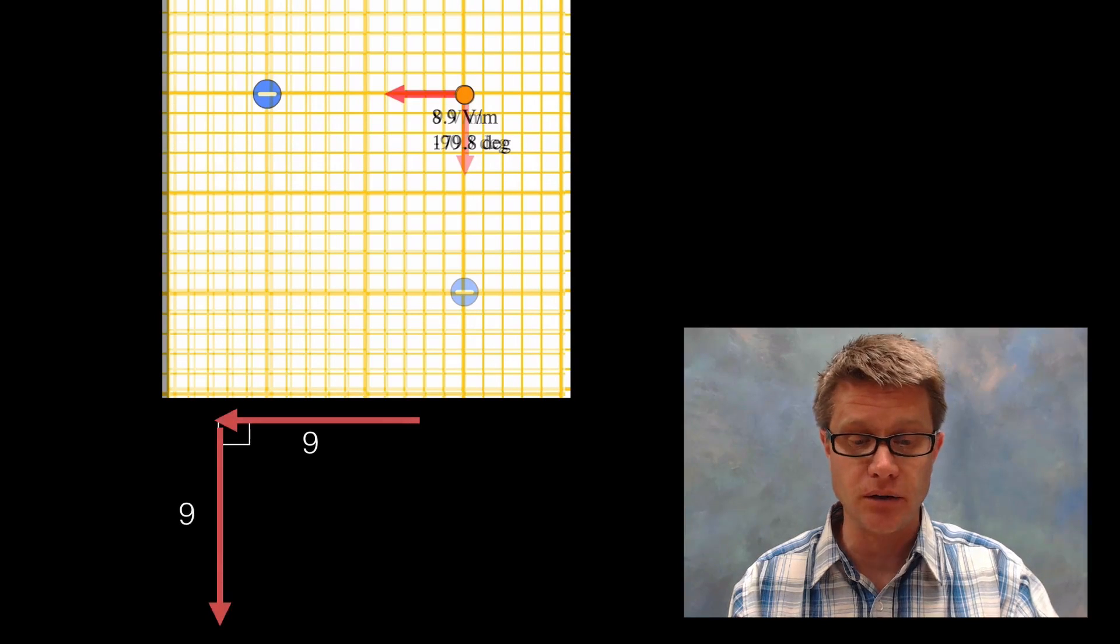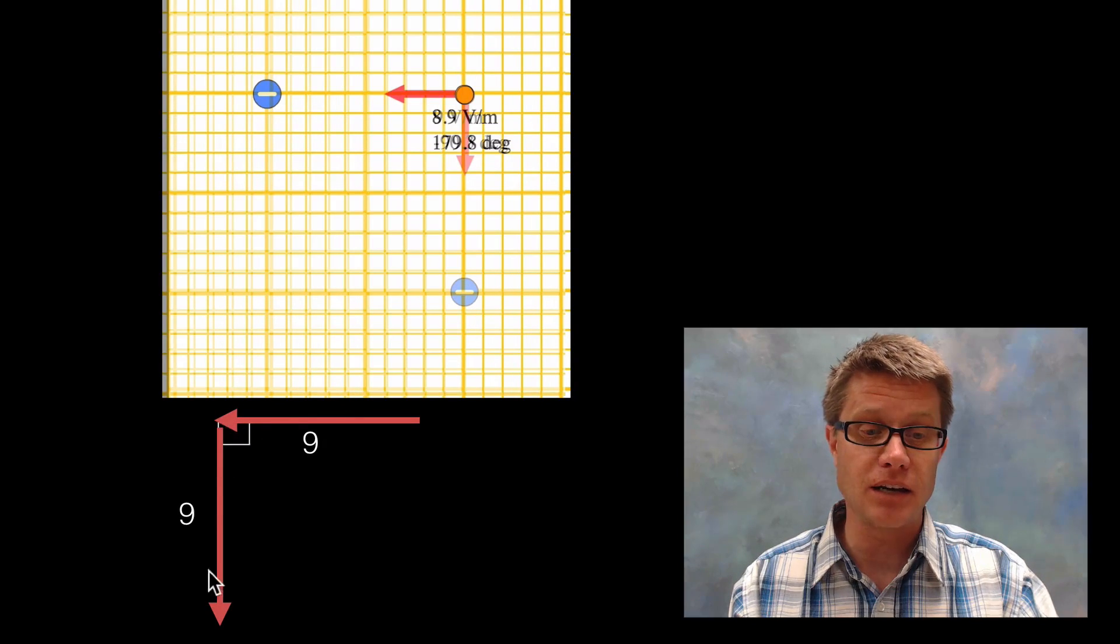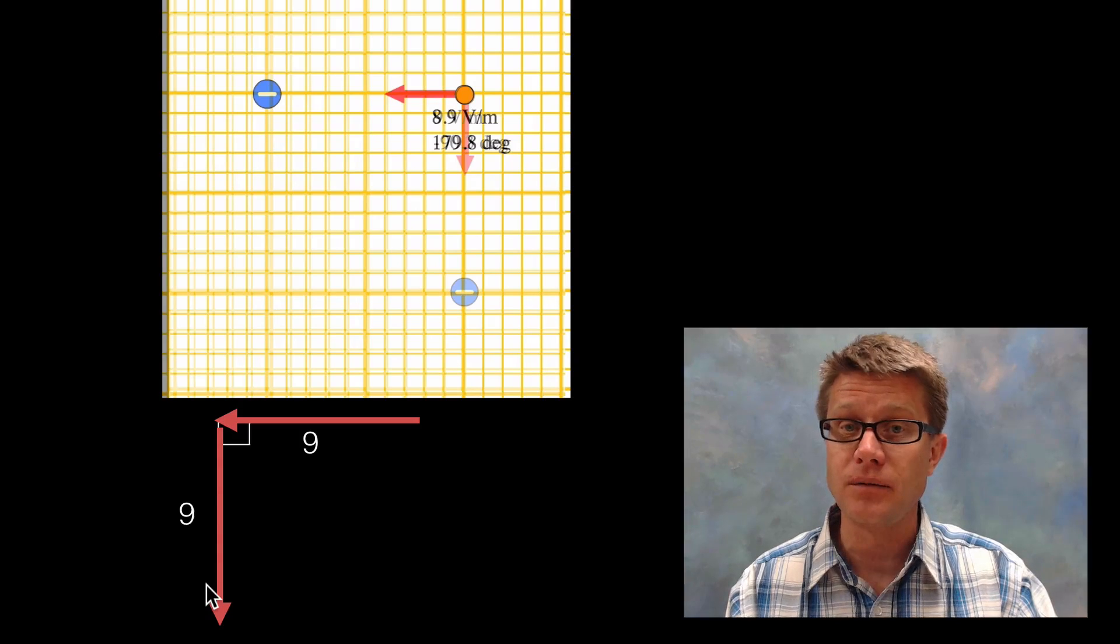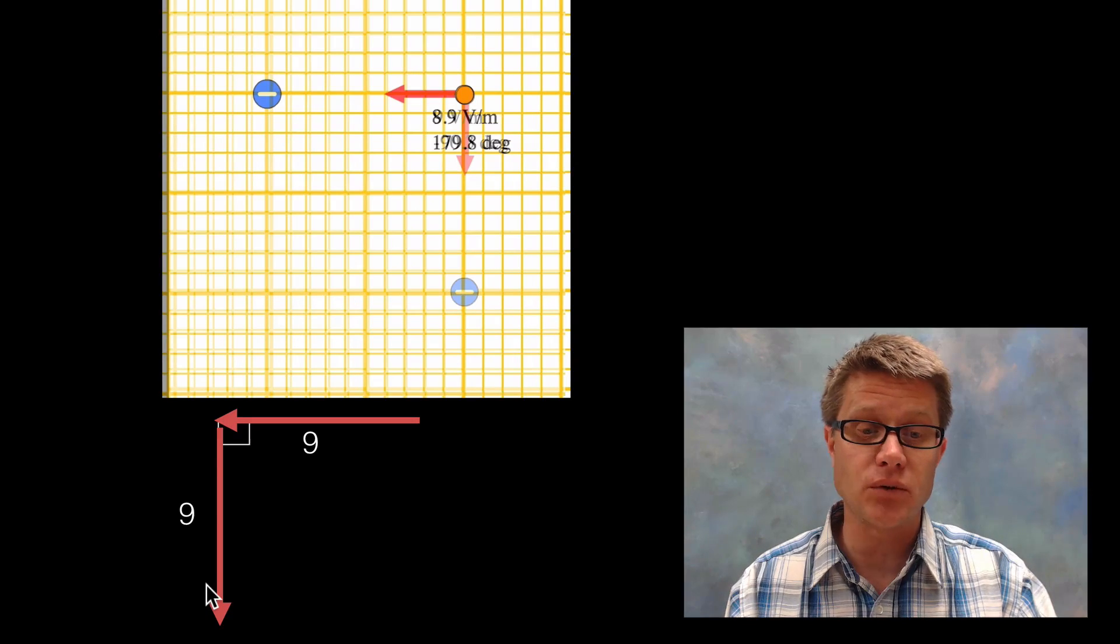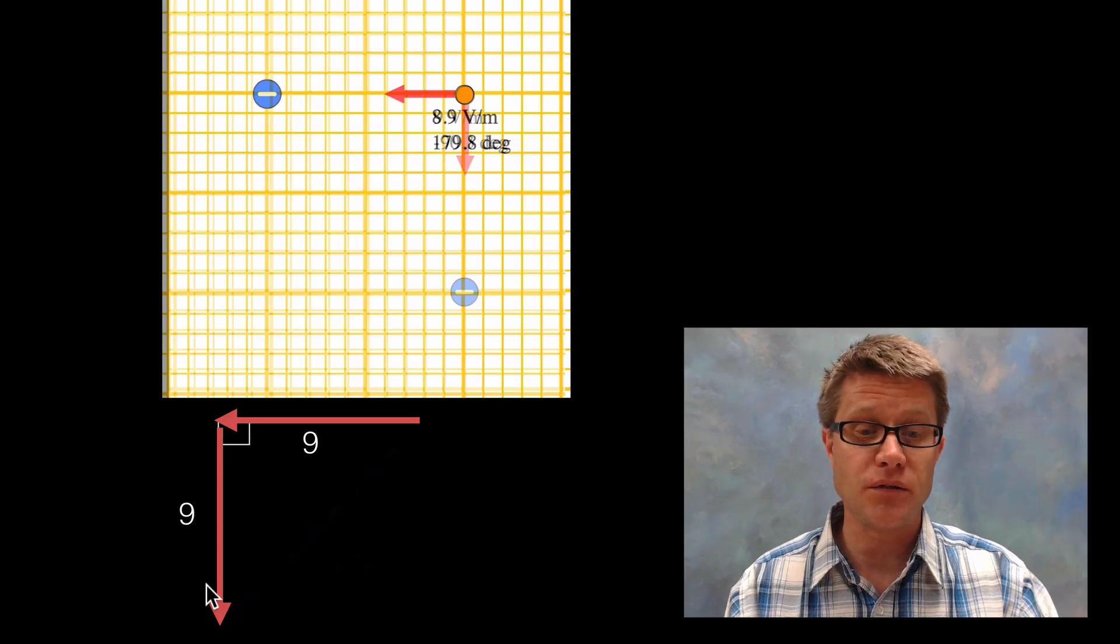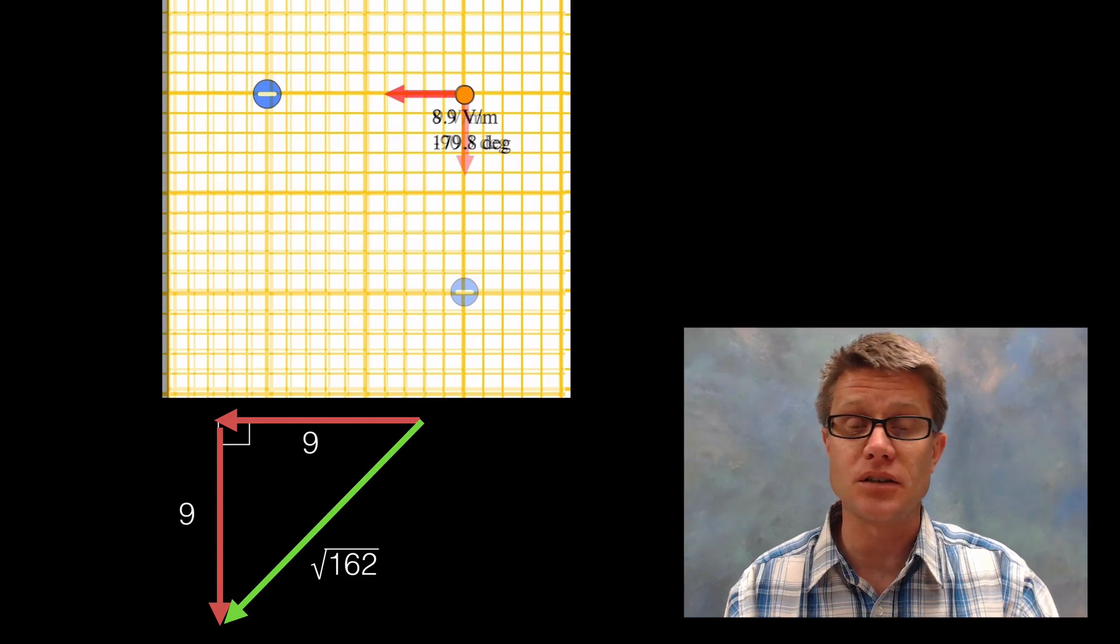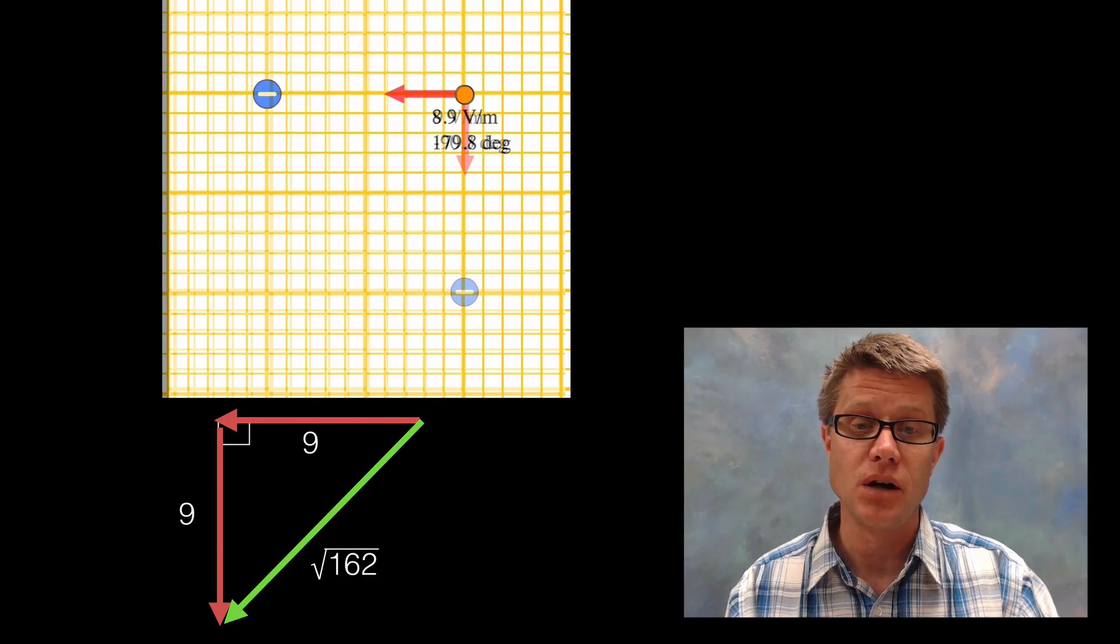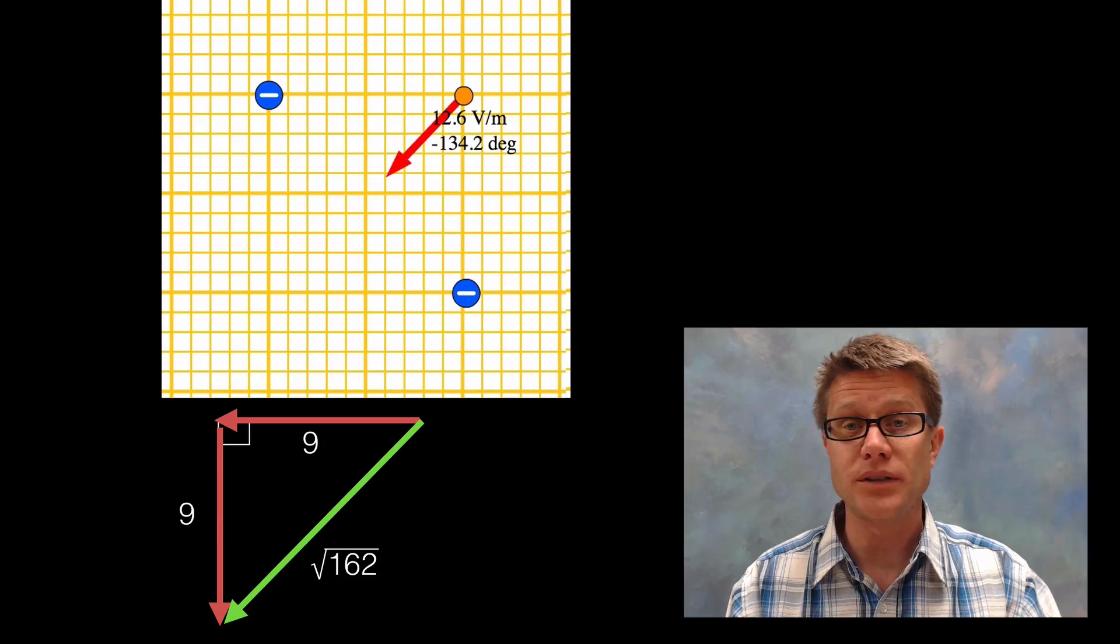If I create a triangle, we've got a 9 on this side, a 9 on that side. So to figure that out, a squared plus b squared equals c squared. So 9 squared, which is 81 plus 81. To figure out what that hypotenuse is, it's the square root of 162, or it's around 12.7.